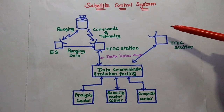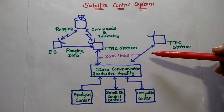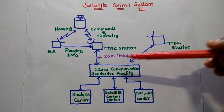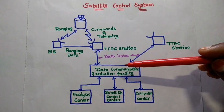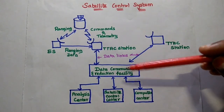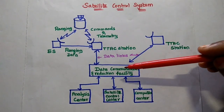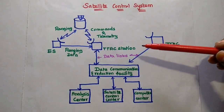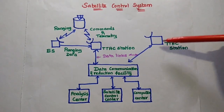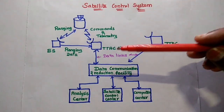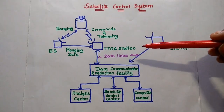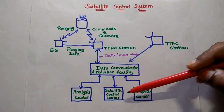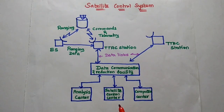This is the overall satellite control system using the TTNC subsystem. We obtain telemetry data from the satellite using the TTNC substation and then process the details. Tracking is used to track the position of the satellite from the earth station, and if there is any change, corrective action can be sent through the command uplink. We can have different TTNC subsystems at different locations on earth — for example, one for the eastern hemisphere zone and another for the western hemisphere zone. A data communication system connects three different functionalities: the analysis center, the satellite control center, and the computer center.